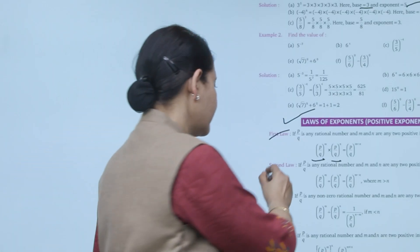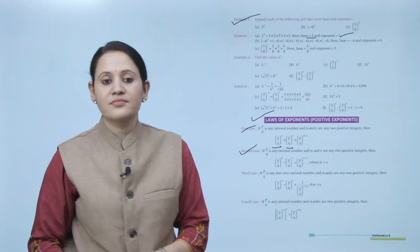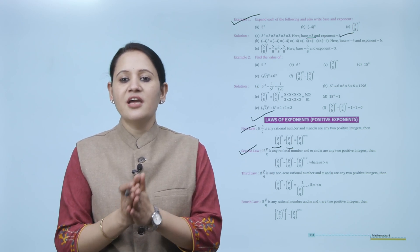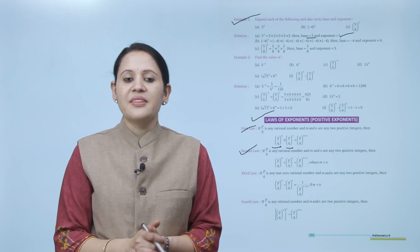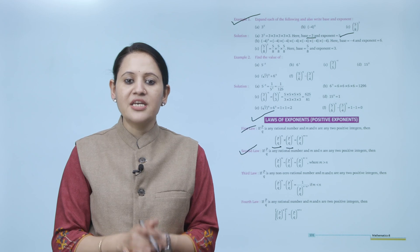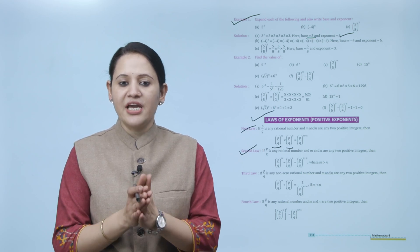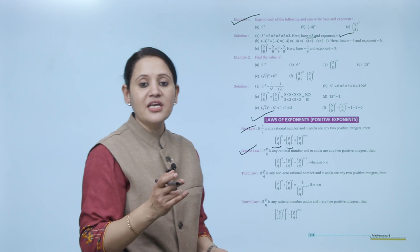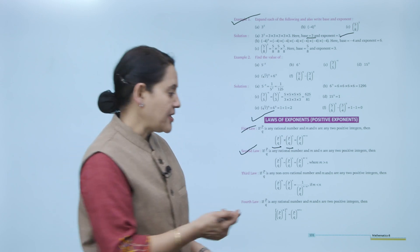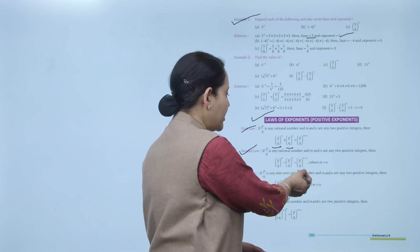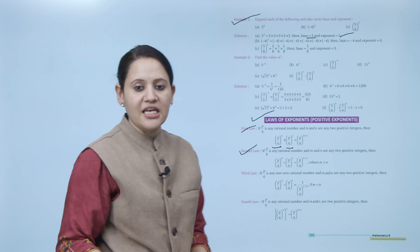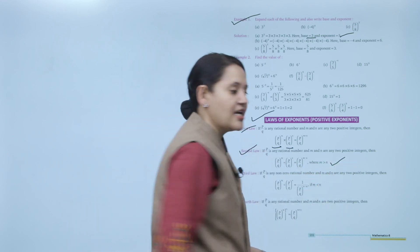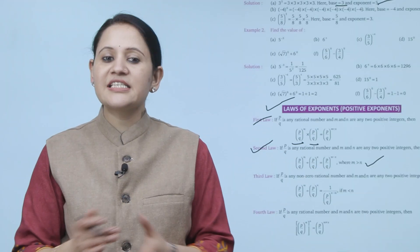Second law: if P/Q is any rational number and m and n are any two positive integers, then (P/Q)^m divided by (P/Q)^n — here, since the base is the same and we have division, the powers are subtracted — equals (P/Q) to the power m minus n, where m is greater than n.